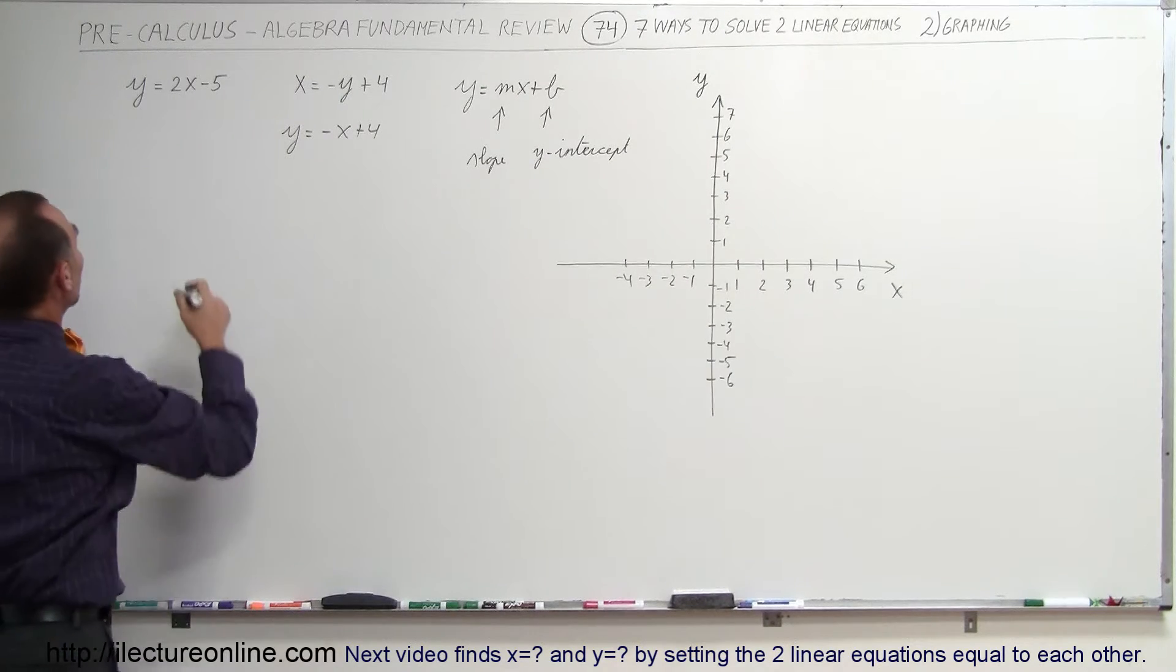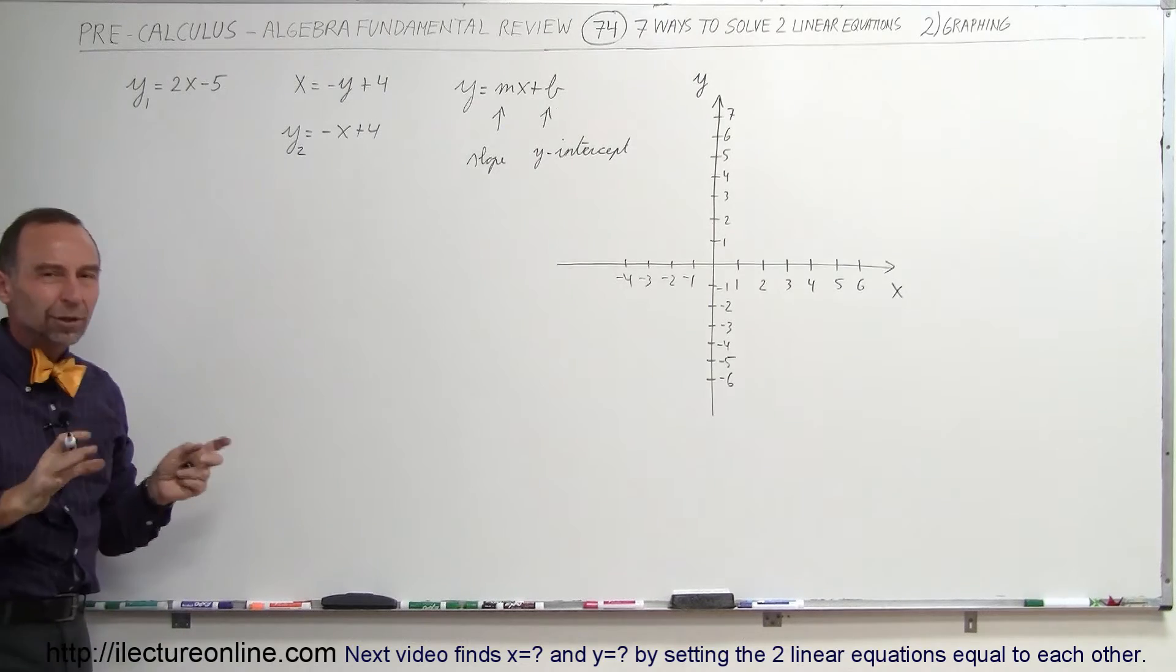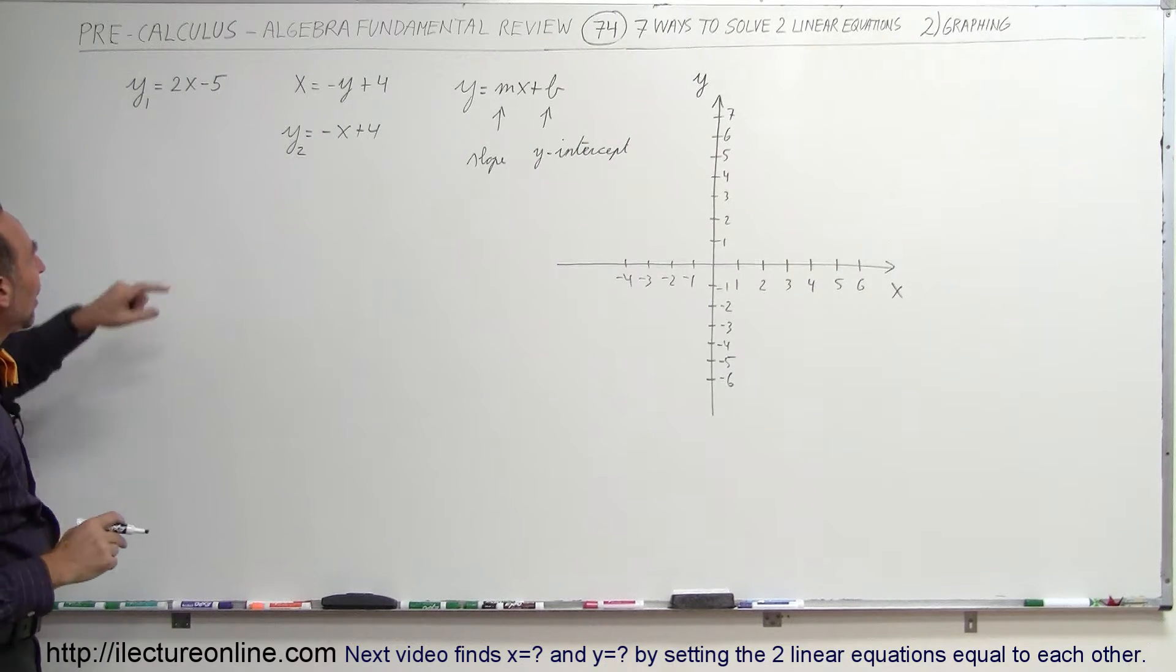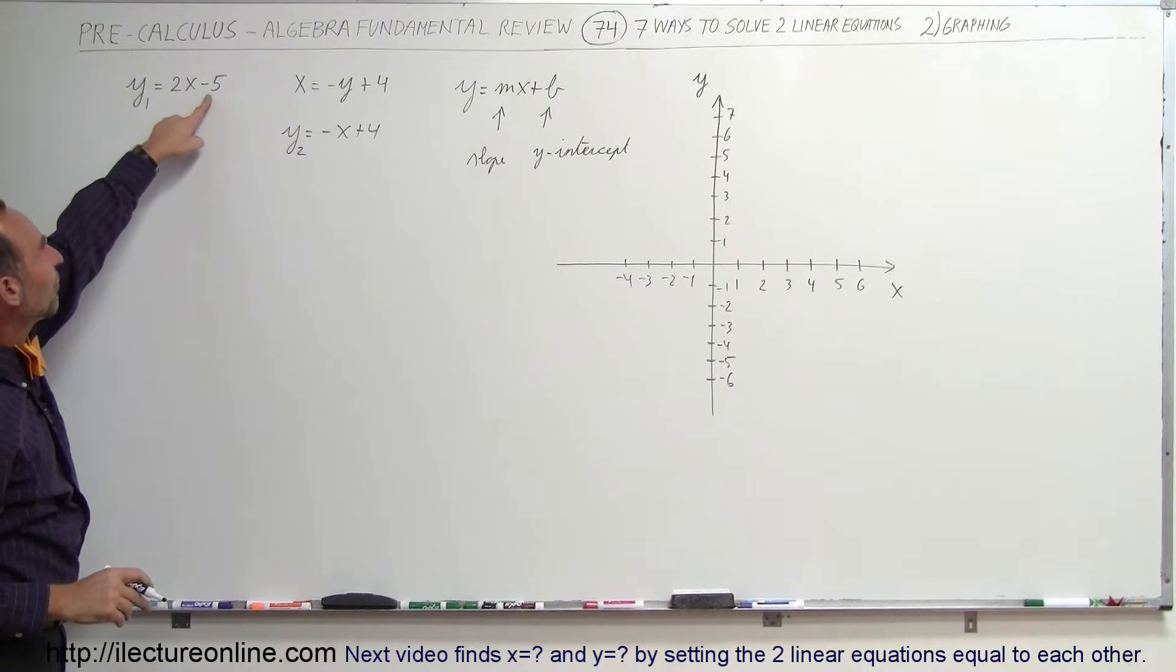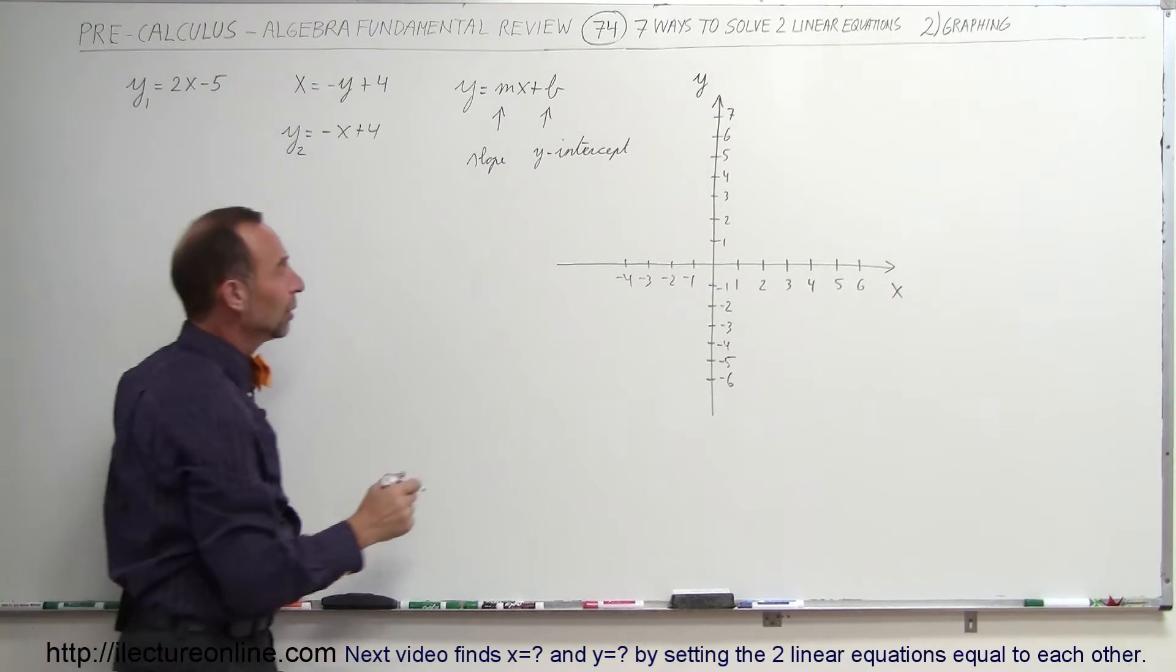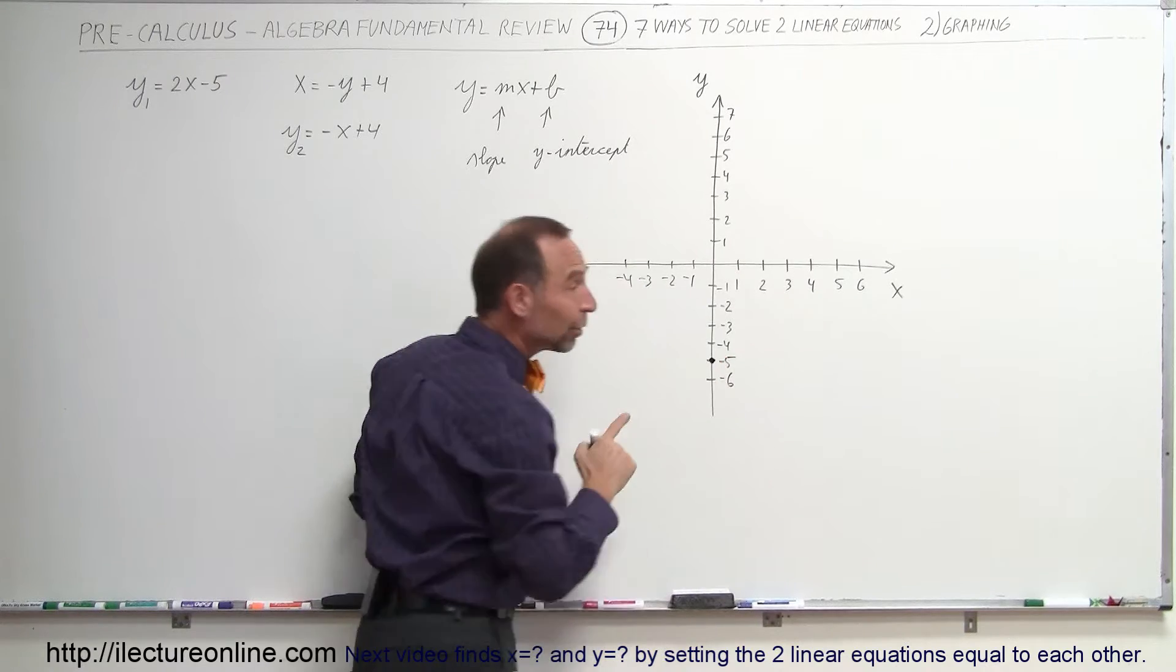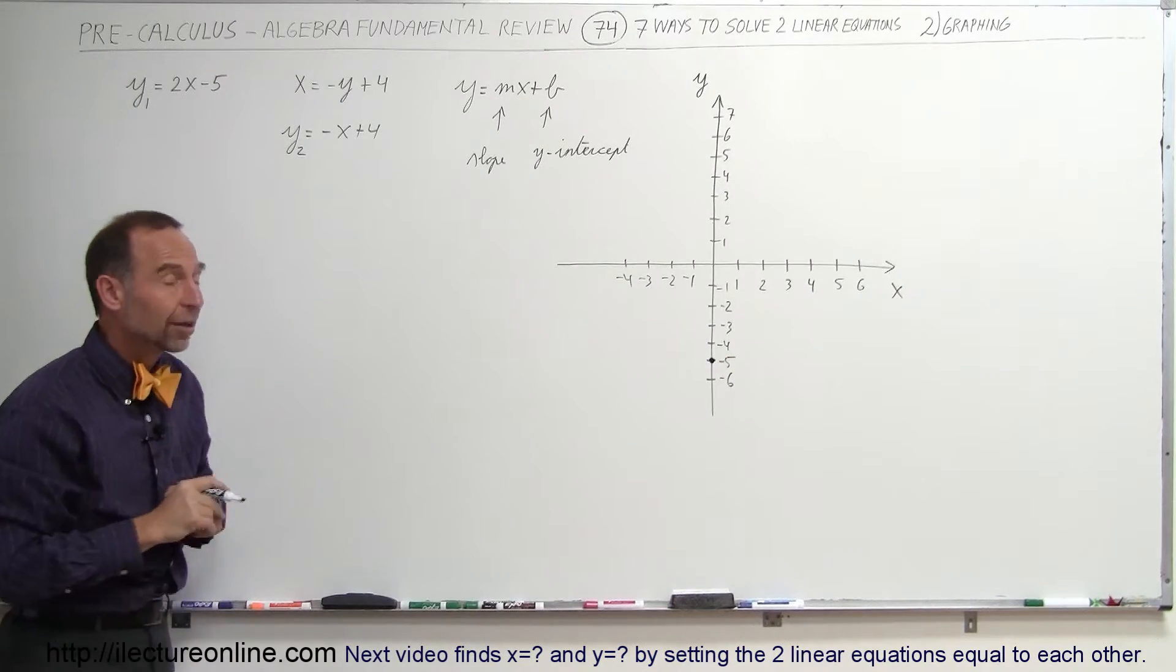So we're going to take the two equations and label them. This is y1, this is y2. It's always good to label them so we can keep them apart. Now we're going to take the first equation and find the y-intercept. The y-intercept is at minus 5, so we label that right here. There's the location where the first line crosses the y-axis.